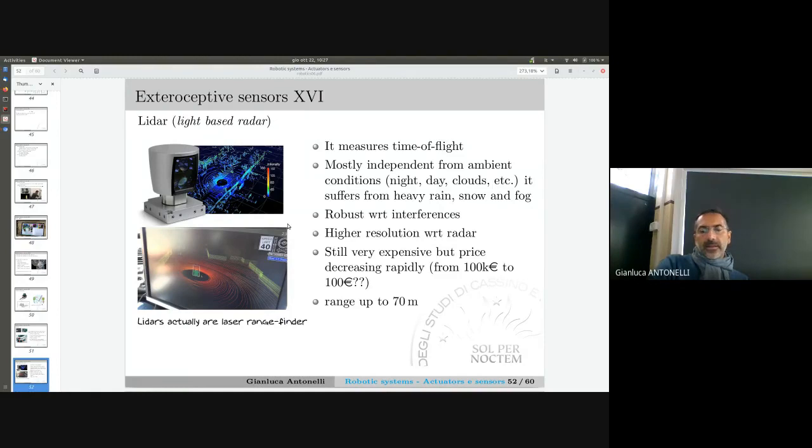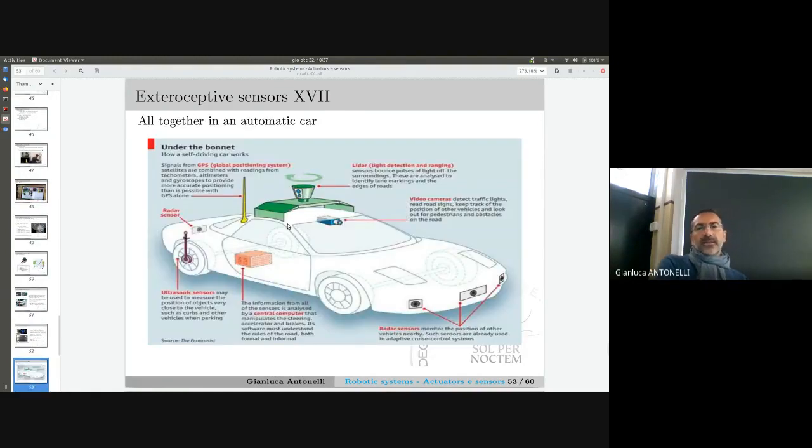I don't know what the price is today, but it's decreasing. Now automatic cars have all sensors together because none of them is perfect in all conditions. None of them is perfect, but they can be used in all conditions. Here, for example, we see the green here is a LIDAR, then a video camera, then here we see some radar, together with the GNSS. Sensors are a big part of the cost of this car.